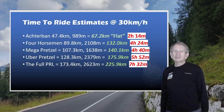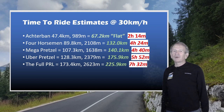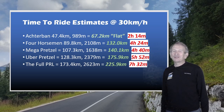For each of those routes, here are the time-to-ride estimates at an average speed of 30 kilometers an hour: Octobon — 2 hours and 14 minutes. Four Horsemen — 4 hours 24 minutes. Megapretzel — 4 hours and 40 minutes. Uberpretzel — 5 hours and 52 minutes. And the full PRL — 7 hours and 32 minutes.